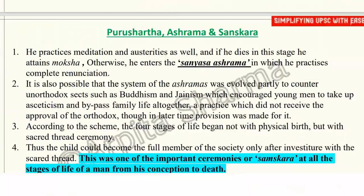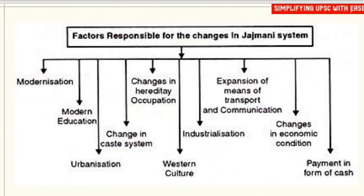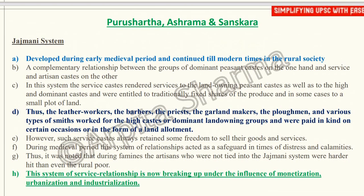The next system to study is the Jajmani system — questions on it have been asked repeatedly in prelims. It developed during the early medieval period and continued till modern times. In rural society, this system is one of service relationships between groups of dominant peasant castes on one hand and service and artisan castes on the other.